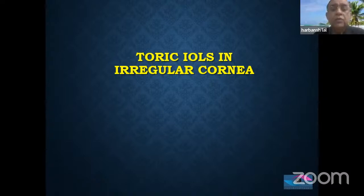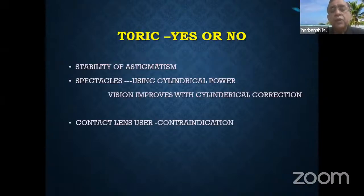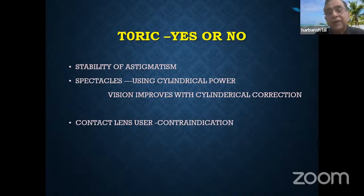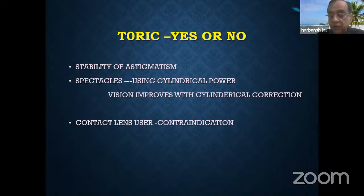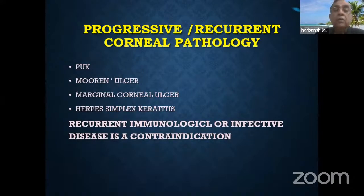Now I come to toric IOLs in irregular cornea. Whether to put a toric IOL or not depends on the stability of the astigmatism. If a patient's vision improves with cylindrical correction in spectacles, it will improve with cylindrical correction in the toric IOL as well — but we need to tell them the improvement will be as with spectacles, not completely. In irregular cornea, if any patient is using contact lenses, particularly RGP or scleral, toric IOL is contraindicated — those lenses will always give better quality of vision.